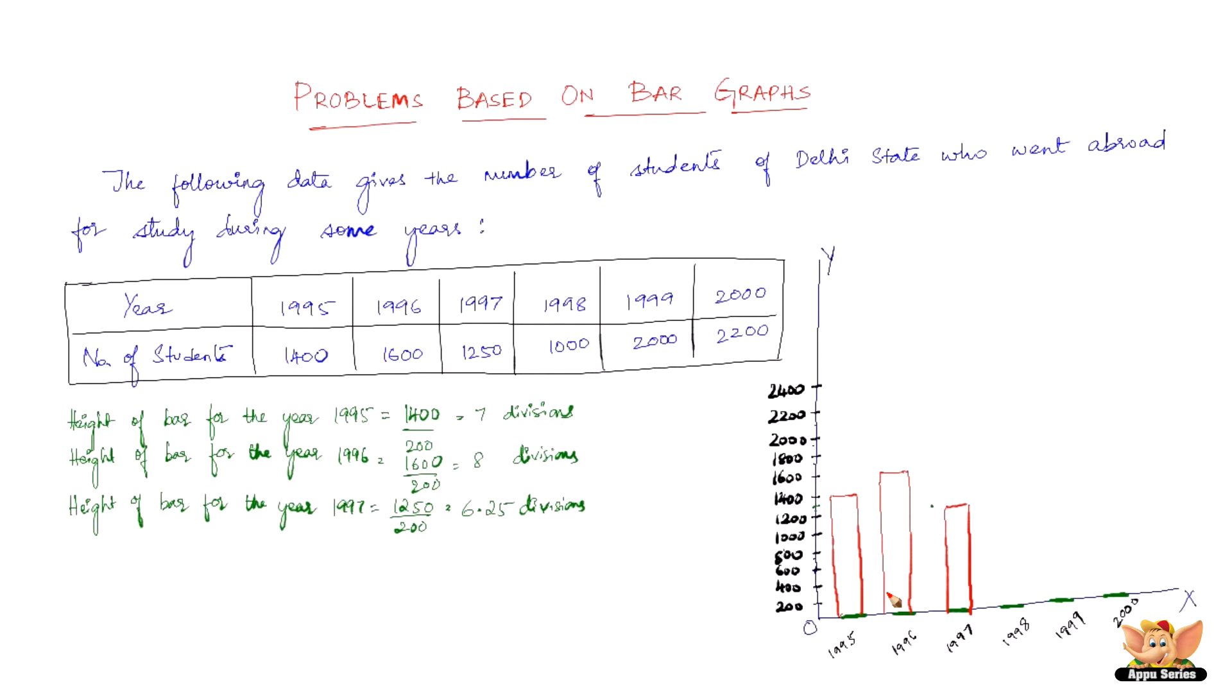Now let us find out the height of the bar for the year 1998. So it's 1000 by 200 which is 5 divisions. So 5 divisions, we need to match up to 1000.